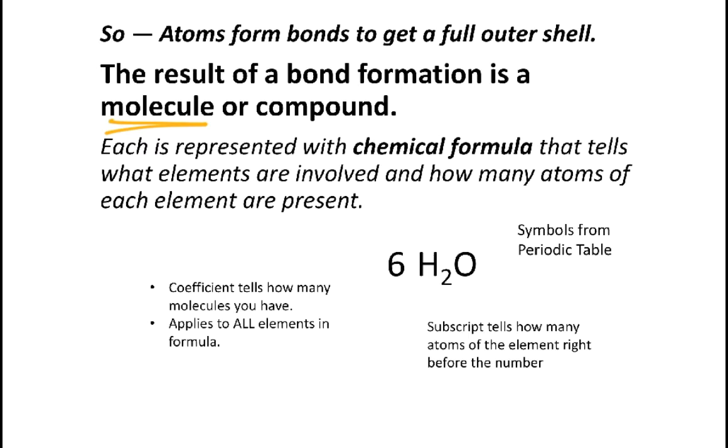So atoms form bonds to get a full valence shell and the result of making a bond is a molecule or compound. Molecule is the more general term. Compound is like a compound word - you have two different elements that are present. I usually just use the word molecule. A molecule is represented with what we call a chemical formula, which is an ingredient list.